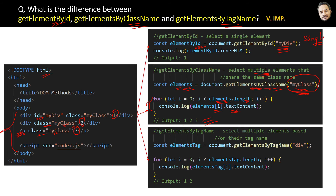getElementsByTagName will also select multiple elements but based on their tag names. Here in the parameter we pass the tag — for example 'div' — and this will get the first and second div elements from the HTML. Again, this variable is an HTML collection and array-like object, and we use a for loop to iterate it one by one and log the outputs one and two,